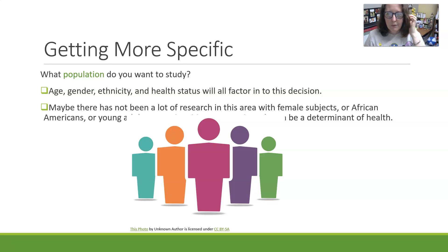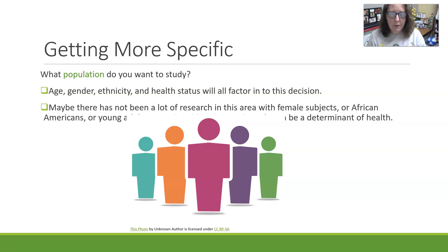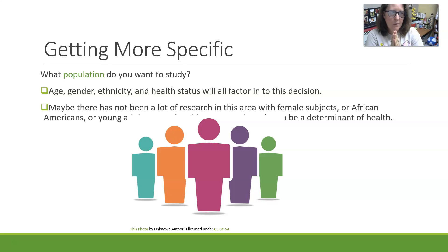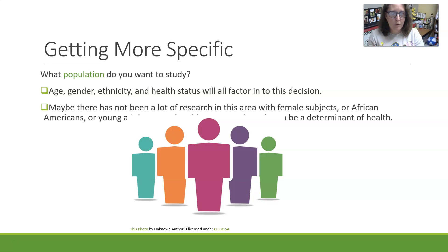As you get more specific, ask yourself: what population do you want to study? Age, gender, ethnicity, and health status all factor into this decision. Maybe there hasn't been a lot of research in a particular area with female subjects, African Americans, young people, or certain zip codes — zip codes can be a determinant of health. Maybe somebody did the study in Europe and you want to do it in the U.S., or the study was done in an urban area and you want to see if you get the same results with technically a different population in a rural area.